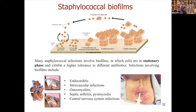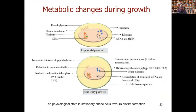Biofilms are a very special target. A lot of phage work done routinely in labs involves log phase or late log phase cultures — cells which are growing quite actively. In a biofilm, cells are generally in the stationary phase, and in this state they exhibit higher tolerance to not only phages but also antibiotics. Biofilms are responsible for a variety of medical conditions. The difficulty with stationary phase cells is that there are physiological changes, including increased peptidoglycan thickness, making cells in biofilms more resistant to endolysins than in liquid cultures.